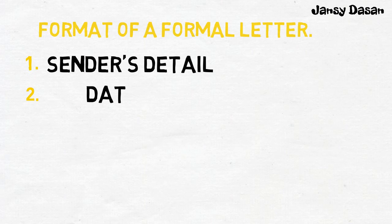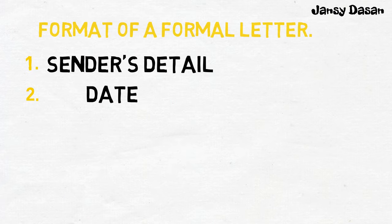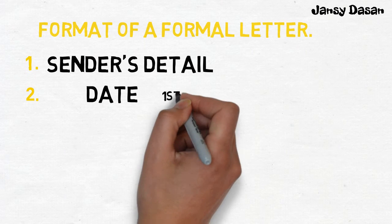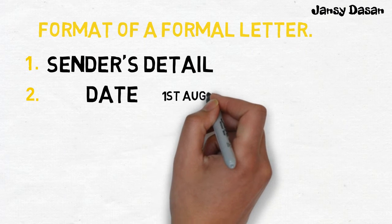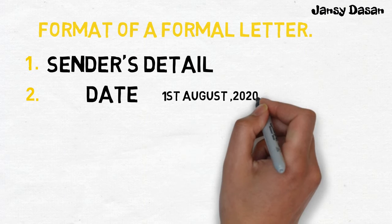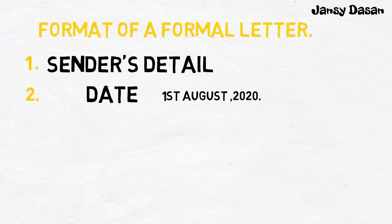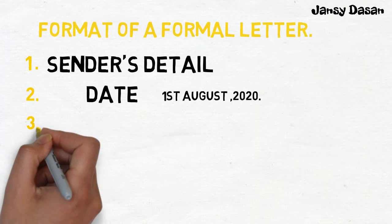Second one is date. The sender's address is followed by the date just below it. This is the date on which the letter is being written. It is important in formal letters as they are often kept on record. The most appropriate way to write the date is: 1st August 2020.